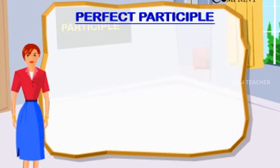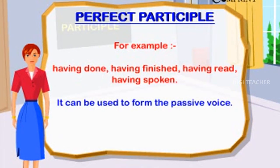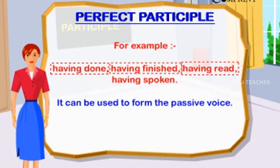Perfect Participle. The perfect participle indicates completed action. You form the perfect participle by putting the present participle 'having' in front of the past participle. For example: having done, having finished, having read, having spoken. It can be used to form the passive voice.